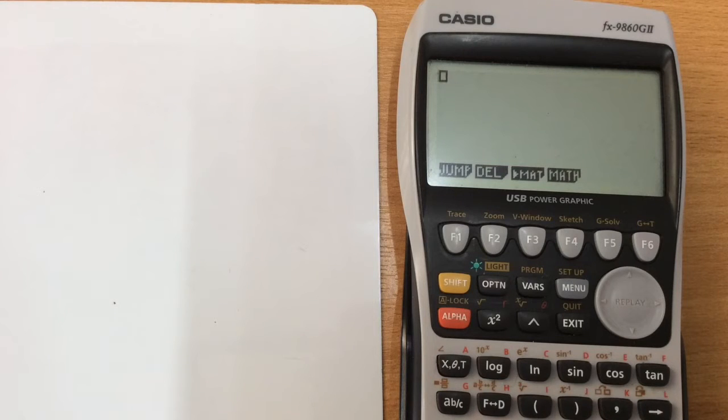This is a quick video following a question sent to me by a viewer. They were concerned with how their calculator was representing different numbers. So they were typing in 0.03 squared and it was coming up with this answer 9e to the minus 4.